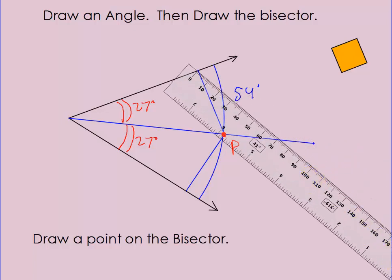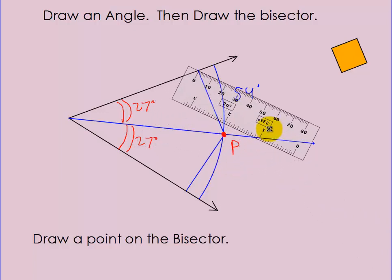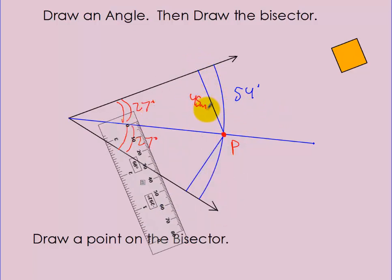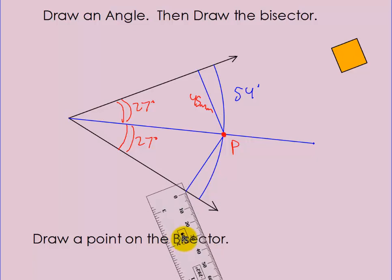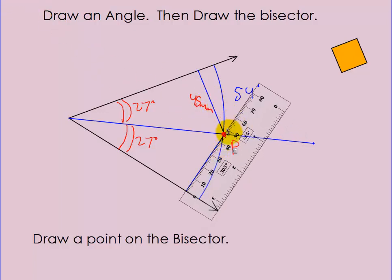Now I want to measure these two lines. I'll pull out my ruler, line it up at zero, and rotate it to measure the length. It's a little hard to see, but I'm going to guess that's about 45 millimeters. So the length of this line is 45 millimeters. Now the other side — starting at zero and rotating to line it up — that also looks like about 45 millimeters. So the distance from P to each side of that ray is equidistant — both 45 millimeters in my case. Your case won't be 45; it depends on how you drew your angle.